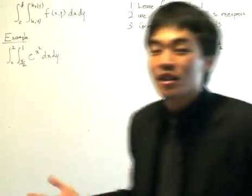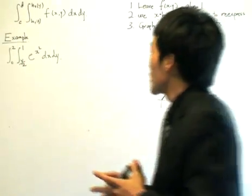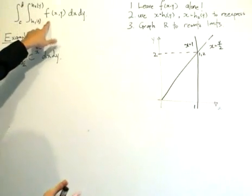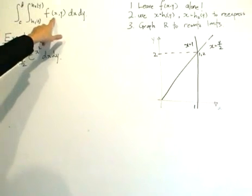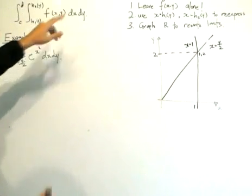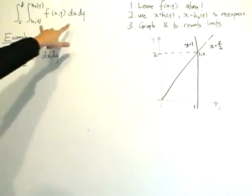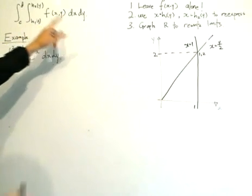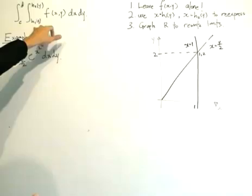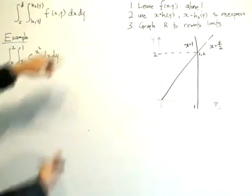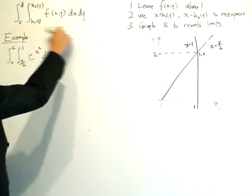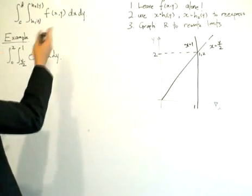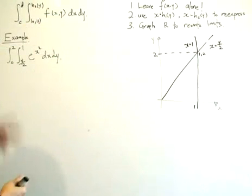This lesson is about reversing the order of integration. Let's say we've got a problem and we want to integrate the function F in terms of X and Y. If we write out the problem like this, we're going to partially integrate it first with respect to X — these are functions in terms of Y — so we can integrate the integrand which is in terms of Y. This is a type 2 region.